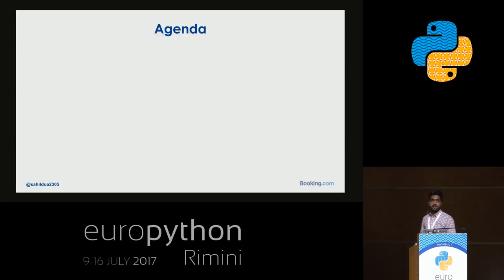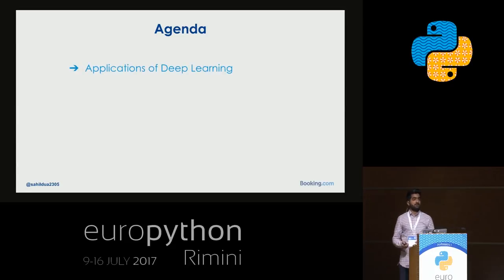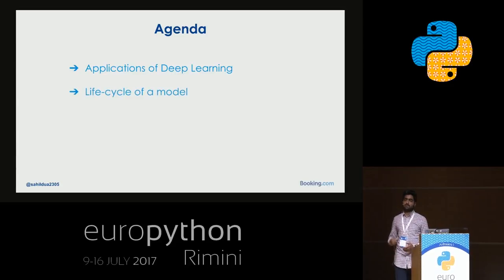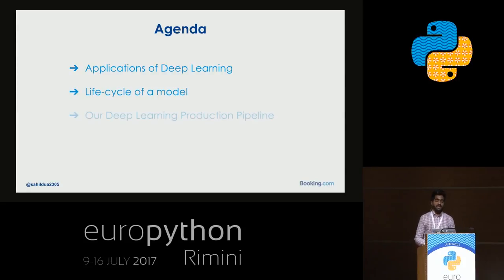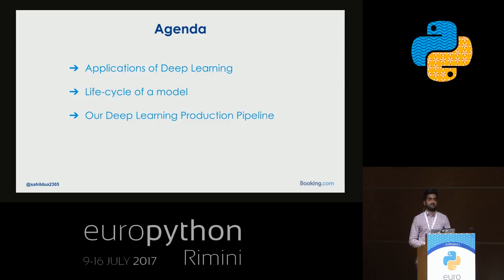Let me start with the agenda. I'm going to start by mentioning a couple of applications of deep learning that we saw at Booking.com. Then I'll talk about the life cycle of our deep learning model from a data scientist's point of view, and next I'll talk about the deep learning production pipeline we've built on top of containers and Kubernetes.